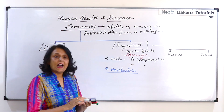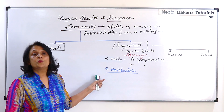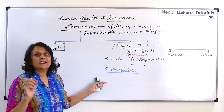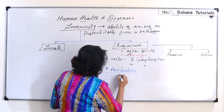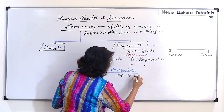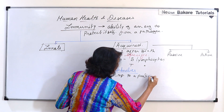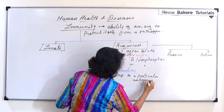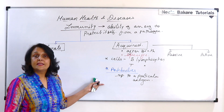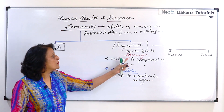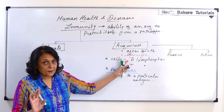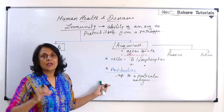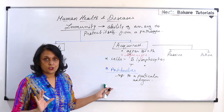Antibodies are very special protein molecules which are specific to a particular antigen, and the cells which produce these antibodies are the B cells. Whenever these antibodies are produced, some memory cells are also formed — we will come to that in a minute.